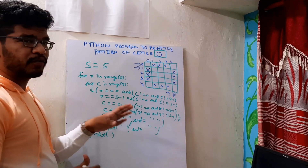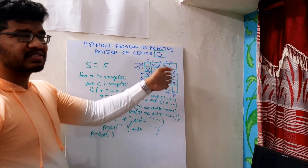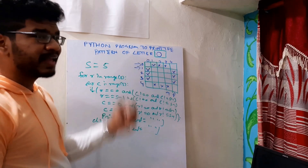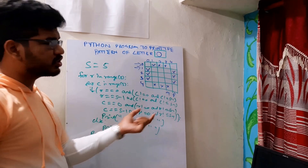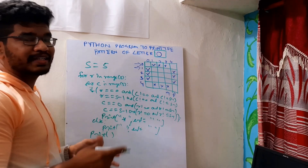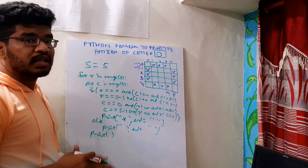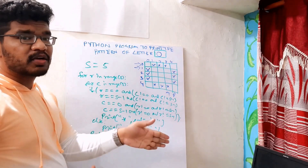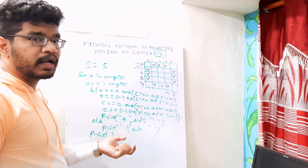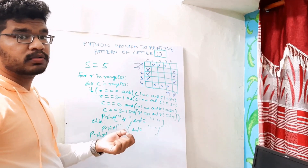Hope you understood. There are four simple conditions — first row, last row, first column, last column — and minor adjustments to remove the extra corners. That's the program for letter O. Now I'll go to my PyCharm IDE, code the same program, execute it, and see the output.